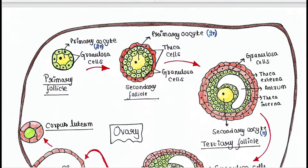Here is the tertiary follicle. This large cell is the secondary oocyte, the by-product of the first meiotic division. The first polar body is not shown here as it generally degenerates. Here you will see the antrum, which is the cavity where you find fluid. The outer layer is the theca externa, the inner layer is the theca interna, and these green cells are the granulosa cells.